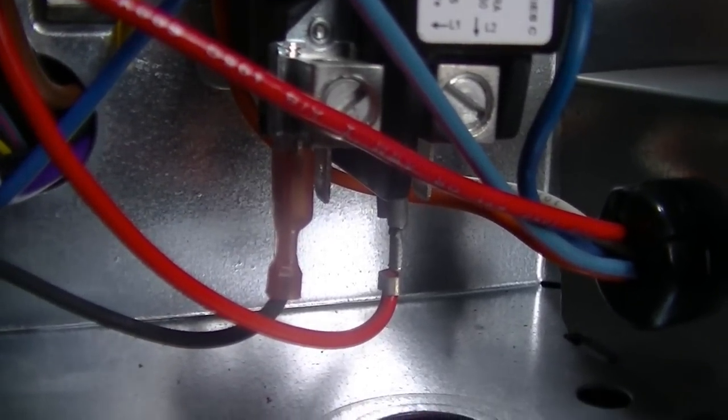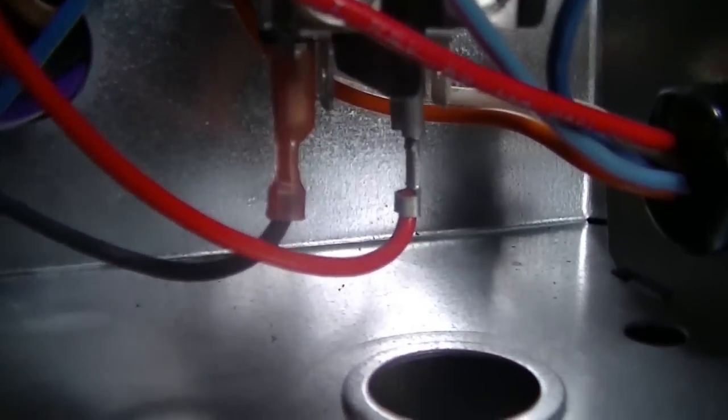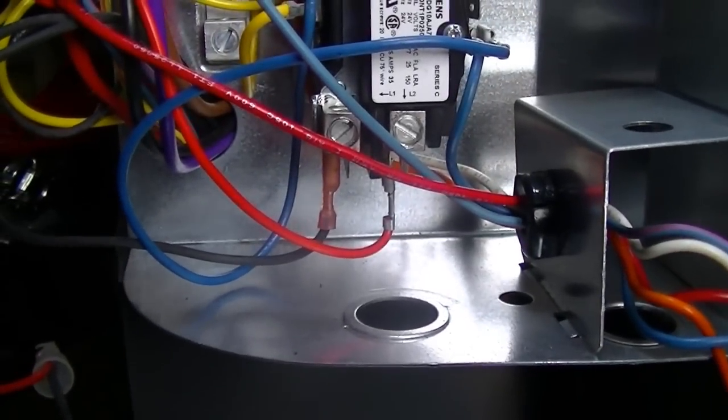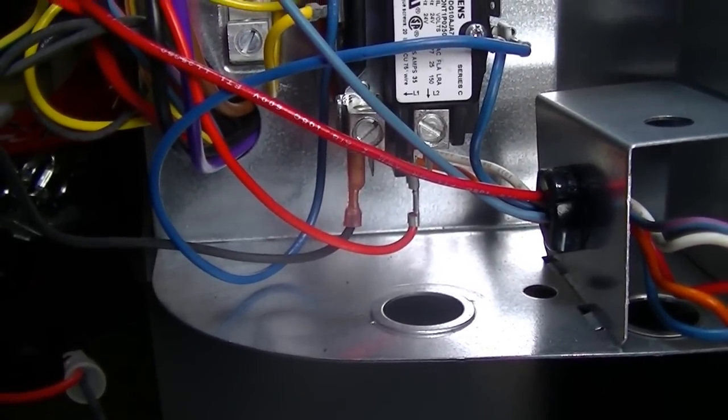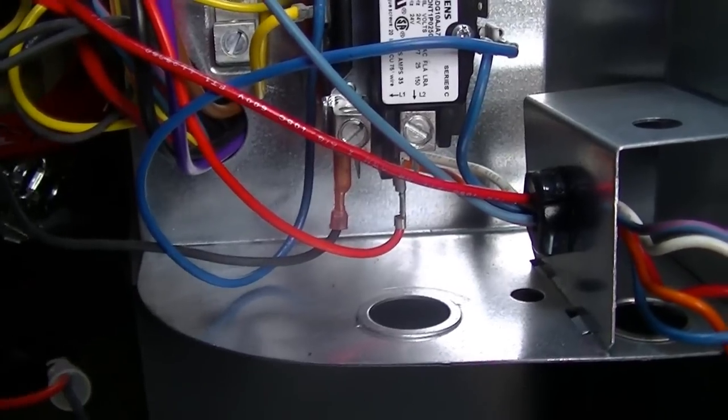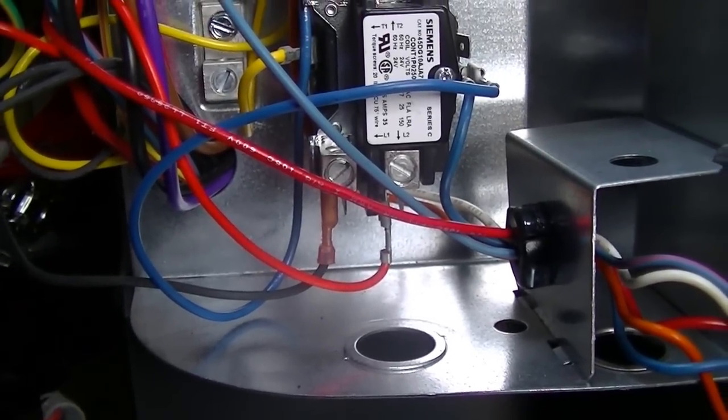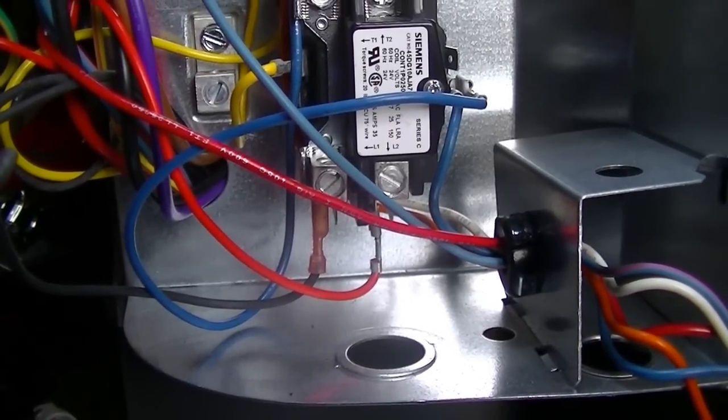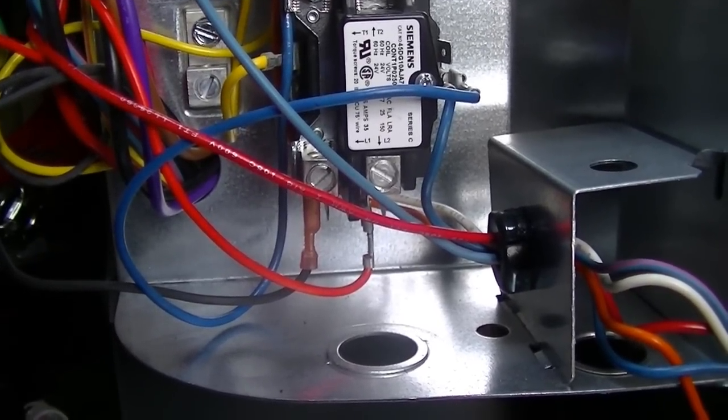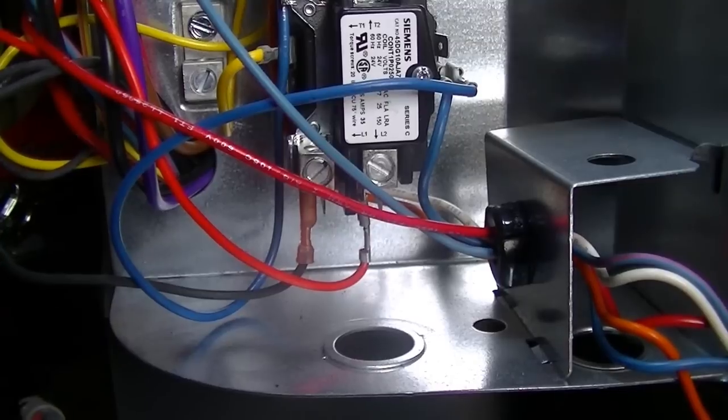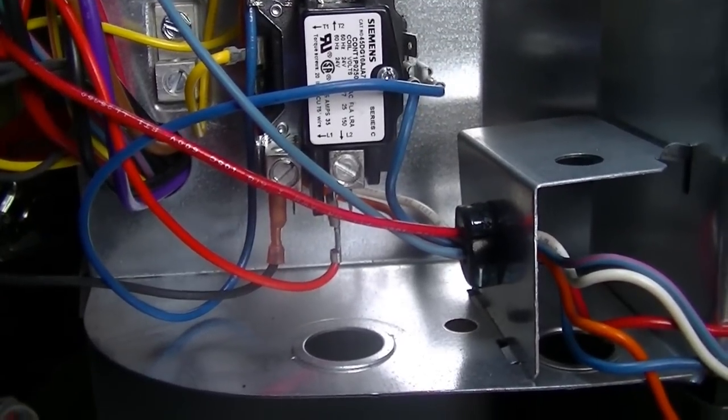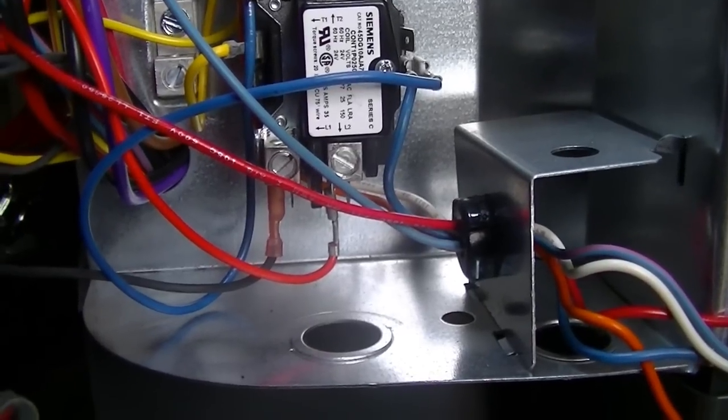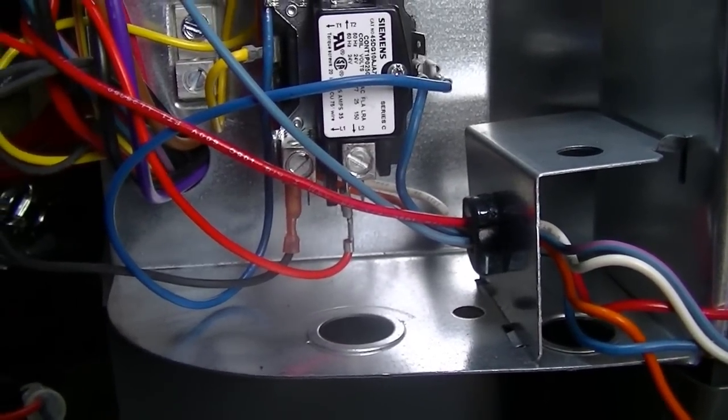As you can see on the bottom of the contactor, there are two wires, a black and red. One of those wires goes to the crankcase heater. Another wire goes to the crankcase heater sensor, and it's a temperature sensor that looks just like a defrost thermostat. And what happens is when the compressor comes on, it heats up the sensor, opens the circuit, and the crankcase heater goes off. Pretty simple. Like I said, it looks just like a defrost thermostat. It's clipped to the discharge line of the compressor. This one's located a few inches after the muffler.